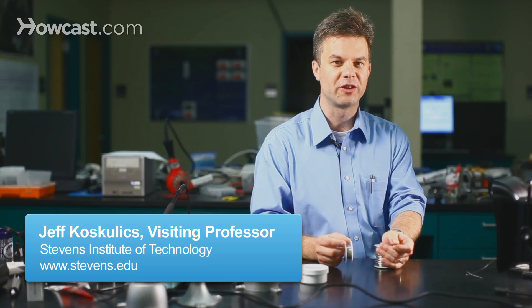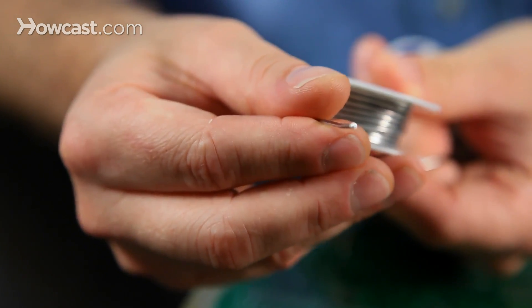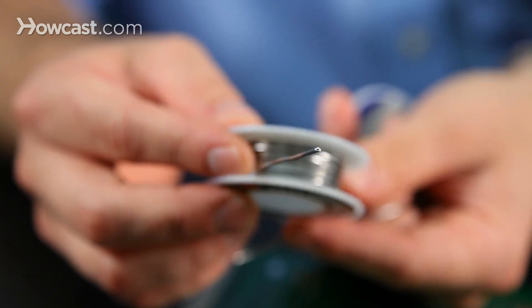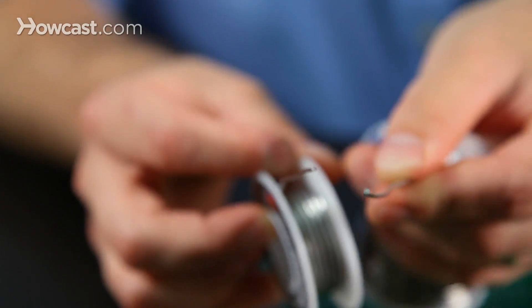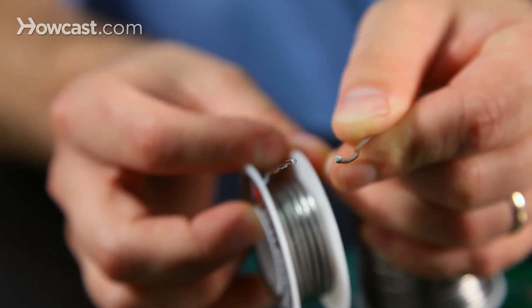Now, not all solders come with flux inside. As you see here, we've got two samples of different types of solder, one of which is a rosin core, which has flux inside the sheath of solder, and on the left we have solid solder, which has no rosin flux at all.